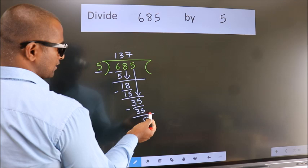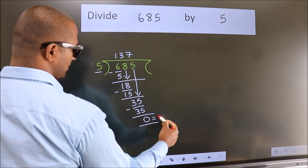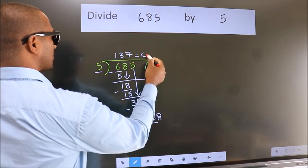No more numbers to bring it down. So we stop here. This is our remainder. This is our quotient.